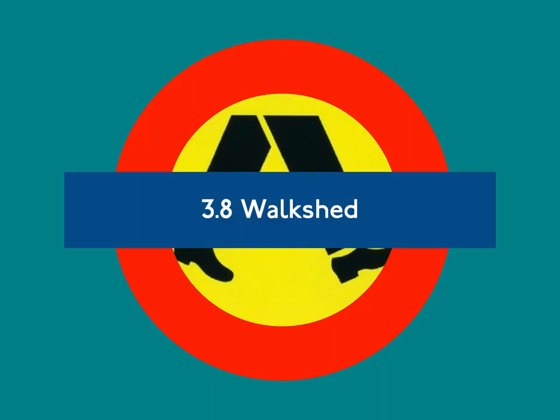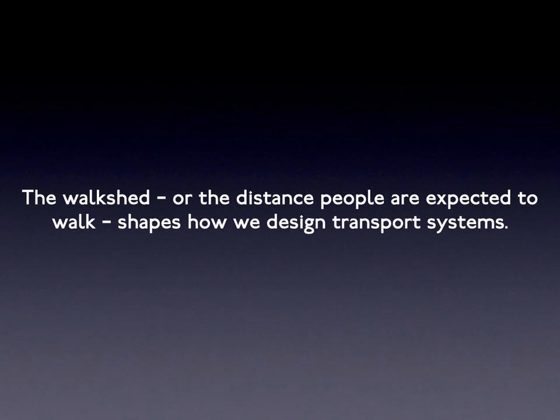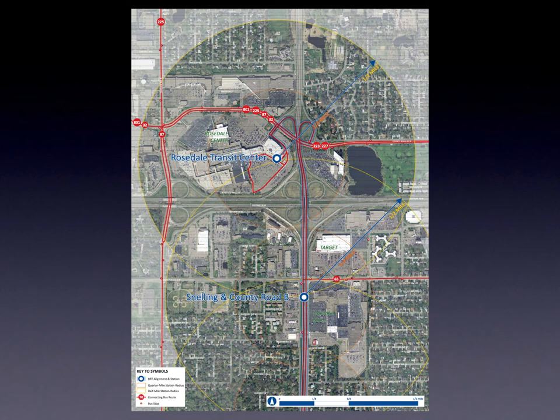3.8 Walkshed. The walkshed, or the distance people are expected to walk, shapes how we design transport systems. In the United States, the rule of thumb is often that people will walk only five minutes to get to a transit stop. In fact, this is too short. The five-minute walk does not even get you from one end of a large shopping mall to the other, and many people make a full circuit on two floors inside the mall on foot. If there are nice enough environments, planners should expect most people to be able to walk 10 or 20 minutes comfortably with no problem.